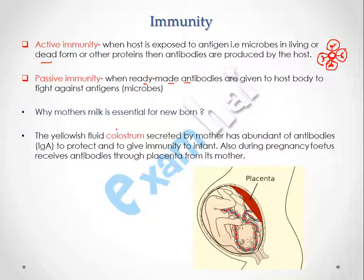The question arises: why is mother's milk essential for the newborn? Mother's milk has an abundance of the antibody IgA, which gives immunity to the infant and allows the infant to survive in the outer environment and become immunized against bacteria present in the atmosphere. During pregnancy, the fetus also receives antibodies through the placenta of the mother, so that the baby gets immunity against many kinds of bacteria when exposed to the environment.